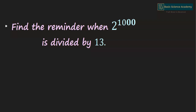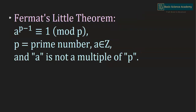Here we're going to find the remainder when 2 to the power of 1000 is divided by 13. Since 13 is a prime number and 13 is not a multiple of 2, we can use Fermat's Little Theorem to find the remainder. According to Fermat's Little Theorem, a to the power of p minus 1 is congruent to 1 mod p, where p is a prime number, a belongs to the integers, and a is not a multiple of p.